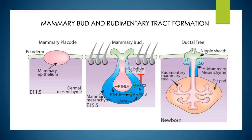PTHLH signaling underscores the importance of epithelial-mesenchymal interactions. By the end of embryonic development, these regulatory processes generate a rudimentary ductal system that provides the framework for mammary outgrowth during puberty.